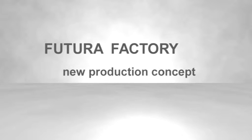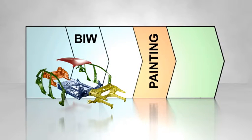The Futura factory operates according to a new production concept. The roof assembly is completely dropped out from the body in white construction.